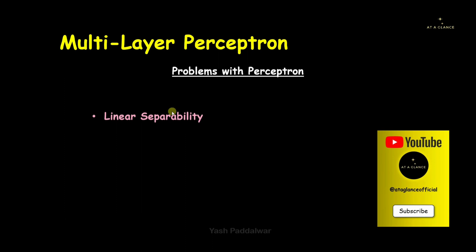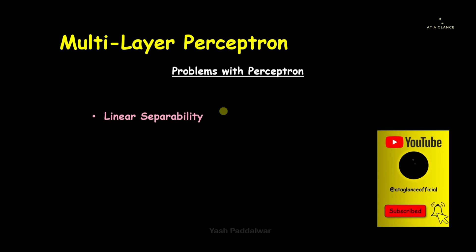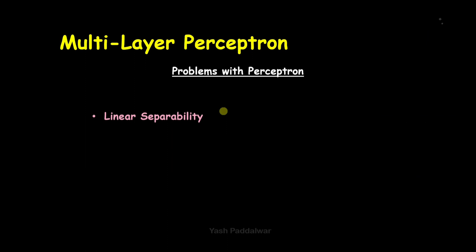The first problem is linear separability. Single layer perceptron builds a classifier which linearly separates the data. But what if the data is non-linearly separable? In that case the perceptron algorithm won't hold good, and that is why we have to shift to multi-layer perceptron.